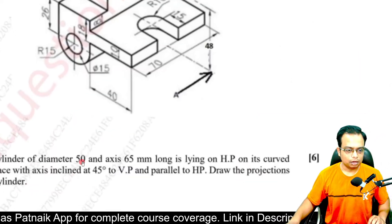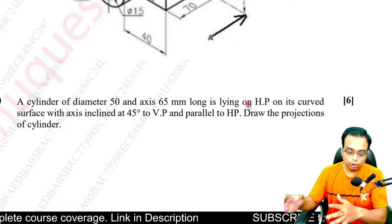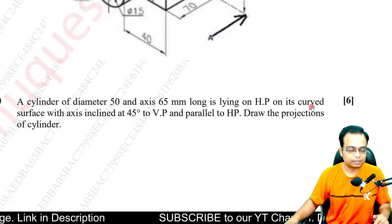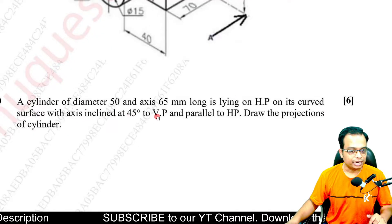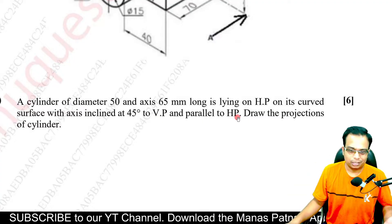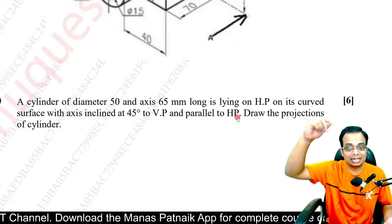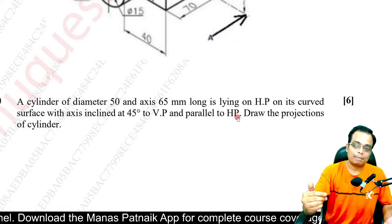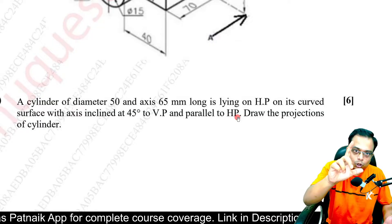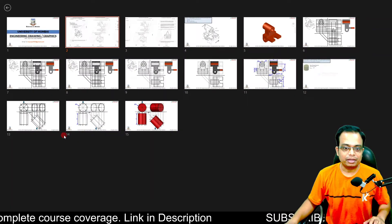We have a cylinder — the diameter is 50 mm, axis is 65 mm long, lying on HP on its curved surface with its axis inclined at 45 degrees to VP. So the axis is inclined to VP and parallel to HP. If it is lying on HP, it is going to stay parallel to HP — that is for sure. Draw the projections of this solid.